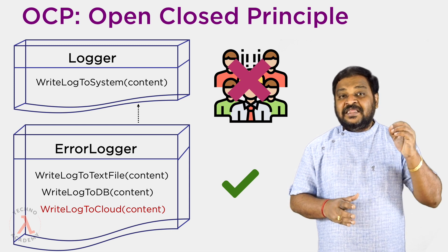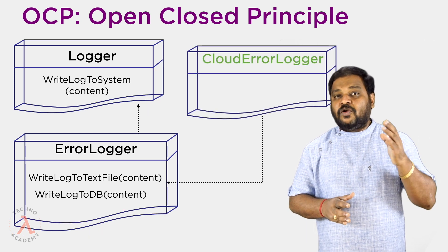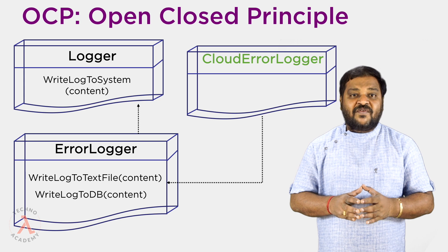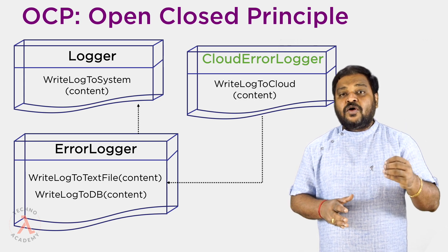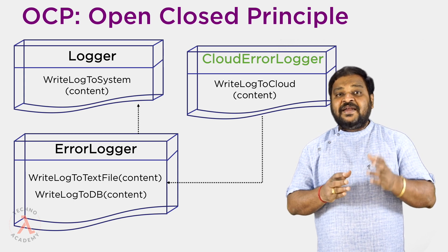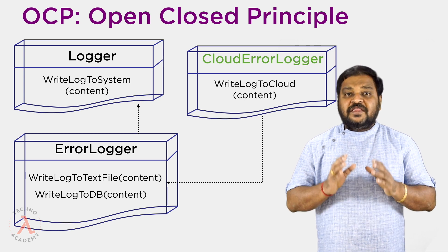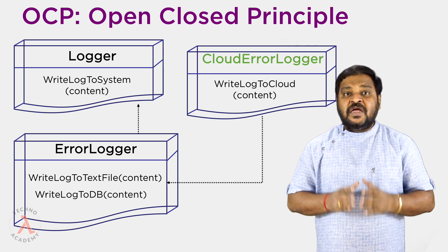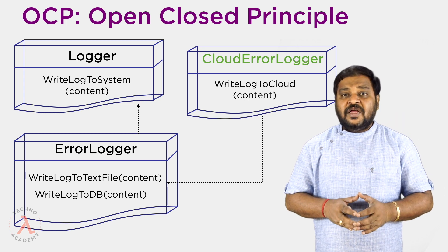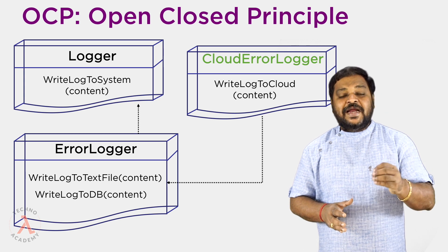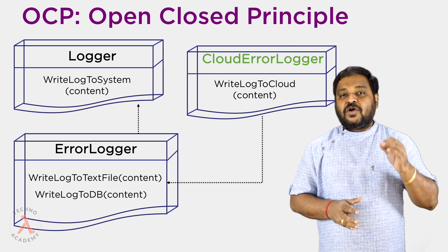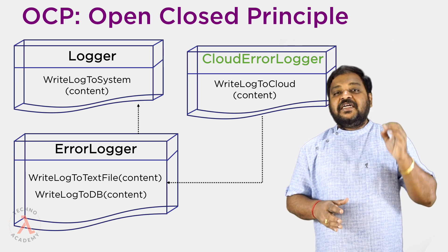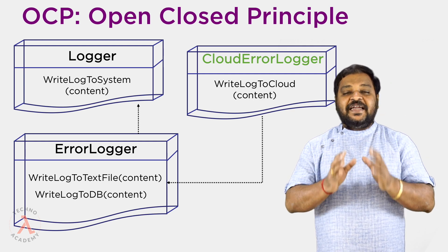The correct approach is to create a subclass of ErrorLogger — for example, a CloudErrorLogger — and within that subclass add the new method log_to_cloud. Alternatively, if you used the abstract class approach from the previous video, you would create a CloudErrorLogger subclass of the abstract ErrorLogger and override the log_error method to write the log entry to the cloud. Hope you have understood the concept of Open Closed Principle. In the next video we shall understand the third SOLID principle: the Liskov Substitution Principle.